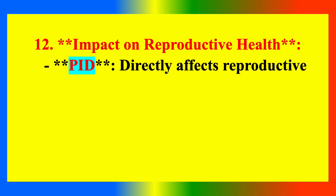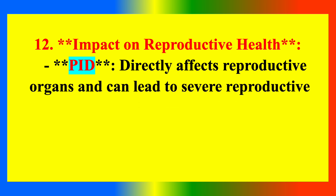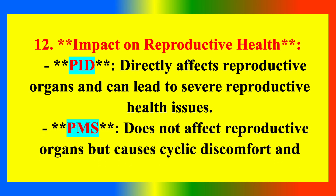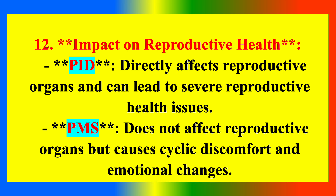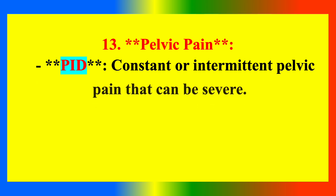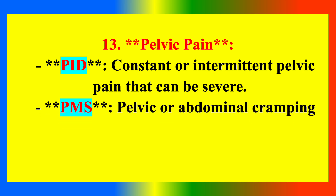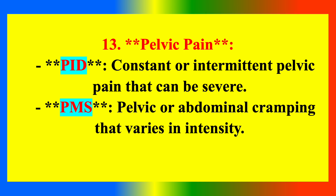Impact on reproductive health: PID directly affects reproductive organs and can lead to severe reproductive health issues. PMS does not affect reproductive organs but causes cyclic discomfort and emotional changes. Regarding pelvic pain, PID causes consistent or intermittent pelvic pain that can be severe, while PMS causes pelvic or abdominal cramping that varies in intensity.